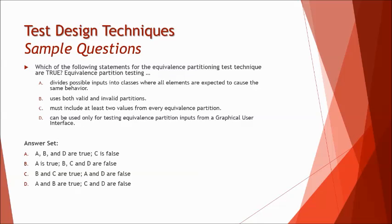Let's look at the second one here: which of the following statements for the equivalence partition test technique are true? Here they have given certain statements about the technique on equivalence partitioning. The first statement says it divides possible inputs into classes where all the elements are expected to cause the same behavior. Yes, the very first statement is true. B says it uses both valid and invalid partitions. It's not mandatory but what they mean is it uses, that means it makes use of. The technique allows you to prepare test cases for valid as well as invalid partitions.